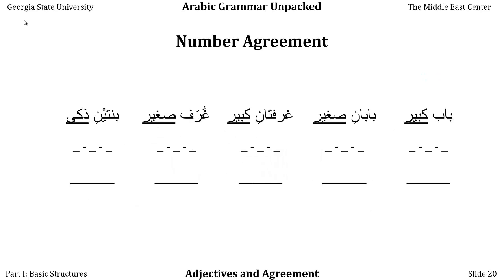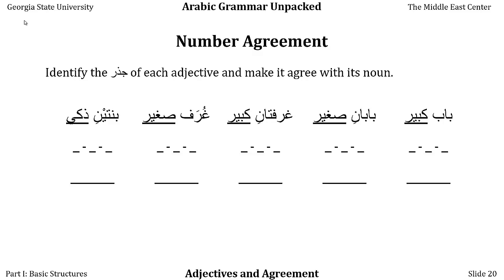Let's take some examples. Again, we're going to identify the jidhr of each adjective and make it agree with its noun. On the right-hand side — remember in Arabic we always begin on the right — we have bab kabir, a big door. The jidhr of kabir is kaf-ba-ra. We don't have to do anything to kabir because bab is already masculine singular.